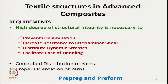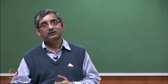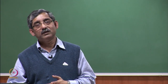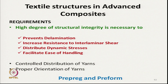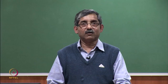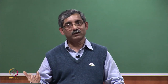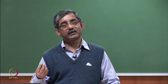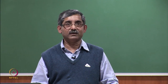These textile structures are basically known as prepreg or preform. Preforms are basically the basic textile structure without the incorporation of matrix material — only the textile reinforcing materials are there. On the other hand, prepreg is a preform but impregnated or incorporated with matrix materials within itself.